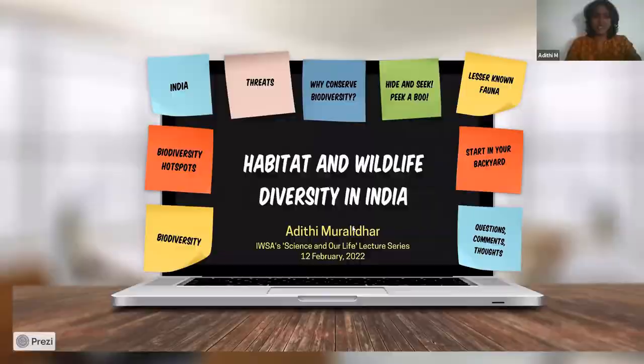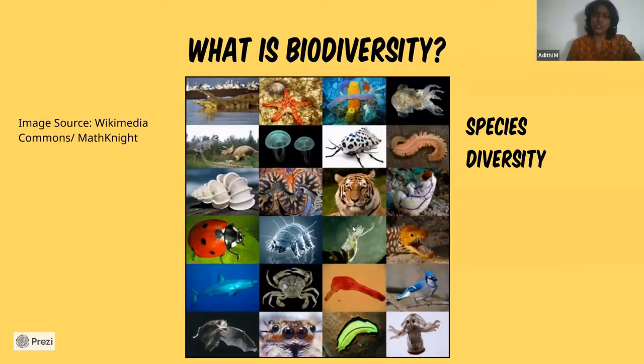Because I've used the term 'diversity,' I want to elaborate on what I mean. It's short for biodiversity, which could mean three things — particularly species biodiversity, wherein we're talking about the variety of flora and fauna: plants, animals, microbes, everything — the sheer variety of different species one finds on Earth. For most of this talk, when I say diversity, I mean species diversity.